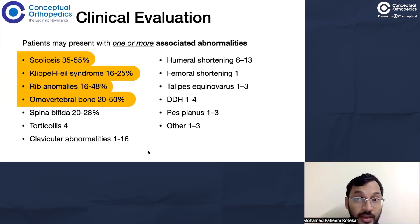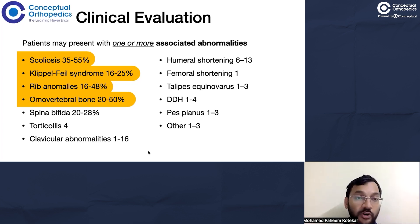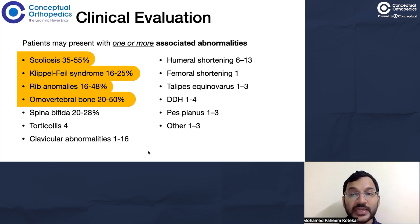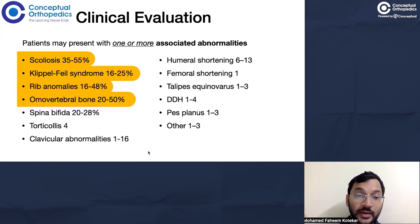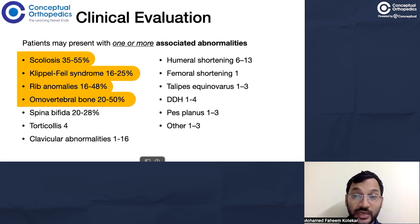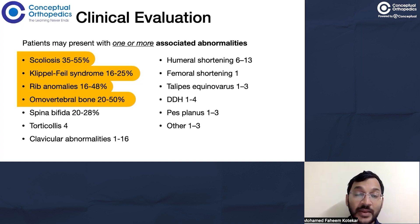Apart from the scapular problem, these children also present with one or more associated abnormalities. Scoliosis, Klippel-Feil syndrome, rib anomalies, and omovertebral bone are present in about half of these children - these are things to look for in almost all children with Sprengel's shoulder. Additional associations seen in a minority of cases include spina bifida, torticollis, clavicular problems, humeral shortening, femoral shortening, CTEV, DDH, pes planus, and others.